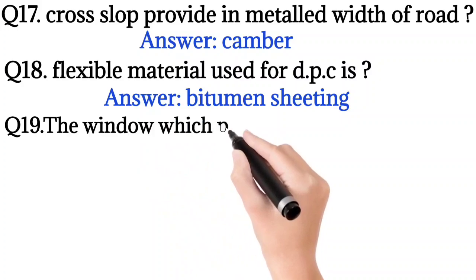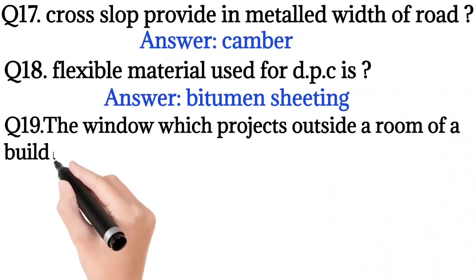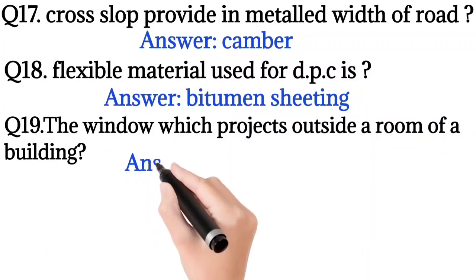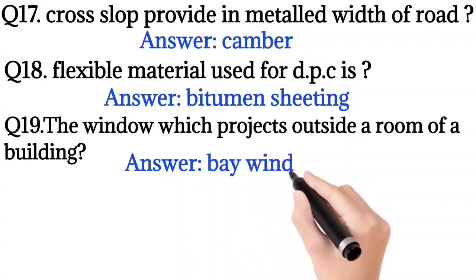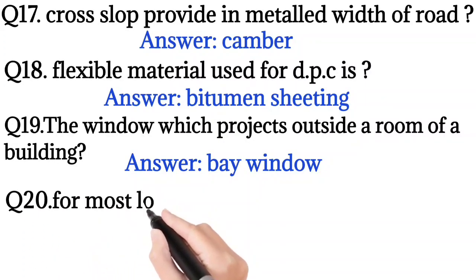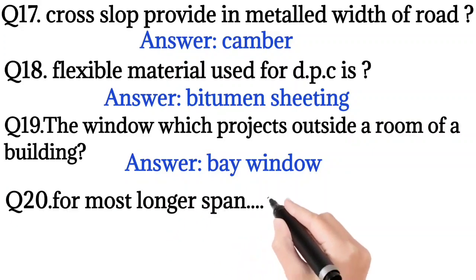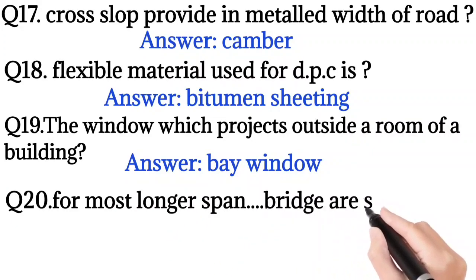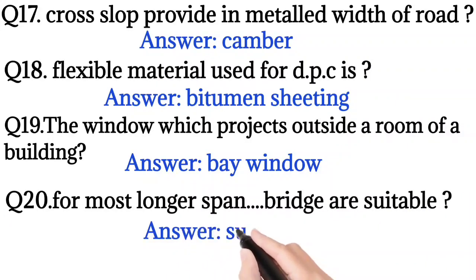Question number 19: The window which projects outside a room of a building? So the answer is bay window. Question number 20: For most longer span bridges are suitable? So the answer is suspension bridge.